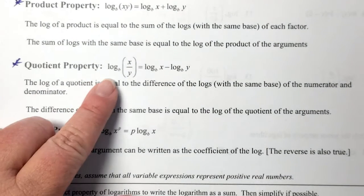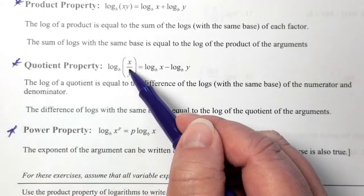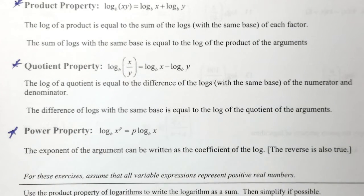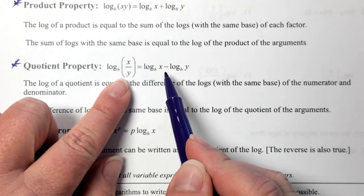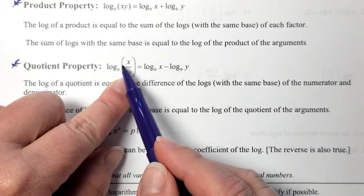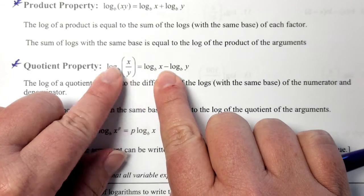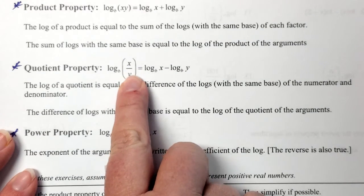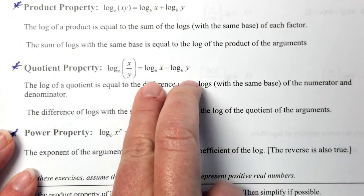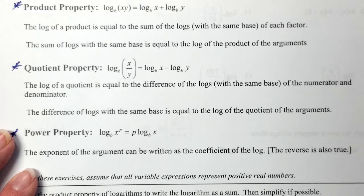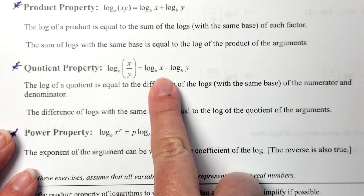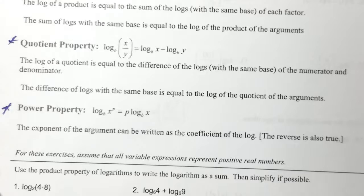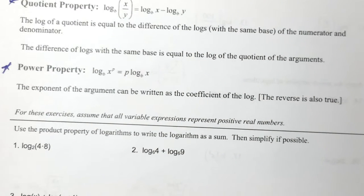There's also a proof in your book if you want to see it. The quotient property works along those same lines — if your argument has two things being divided, here X and Y being divided, you can rewrite that as two separate logs being subtracted: log base B of X minus log base B of Y. It does not mean subtraction and division are the same thing — it's the argument that was being divided, so we write it as two logs being subtracted.